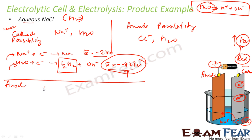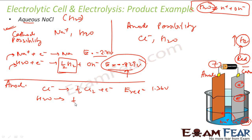At the anode, we have Cl⁻ which can give chlorine gas (E° reduction = +1.36 V) and water which can give O₂, H⁺, and electrons (E° reduction = +1.23 V). At the anode we pick the species with the lower reduction potential, which is water at +1.23 V. However, due to over potential, in practice chlorine is often the product at the anode.